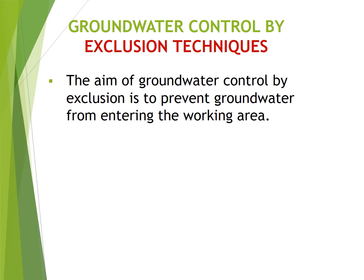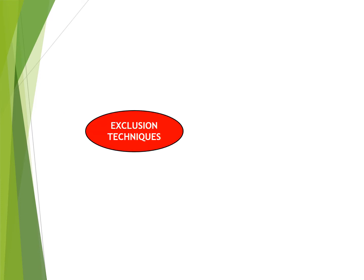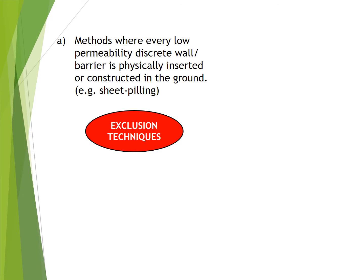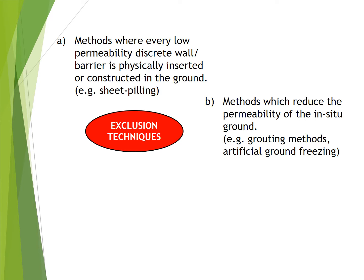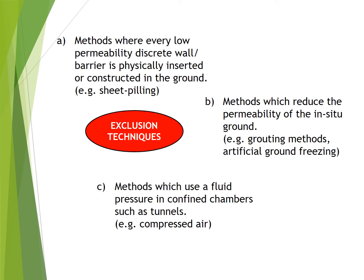The aim of groundwater control by exclusion is to prevent groundwater from entering the working area. Exclusion techniques are categorized as: A) methods where a low permeability discrete wall or barrier is physically inserted or constructed in the ground, for example sheet piling; B) methods which reduce the permeability of the in-situ ground, for example grouting methods and artificial ground freezing; C) methods which use fluid pressure in confined chambers such as tunnels, for example compressed air.